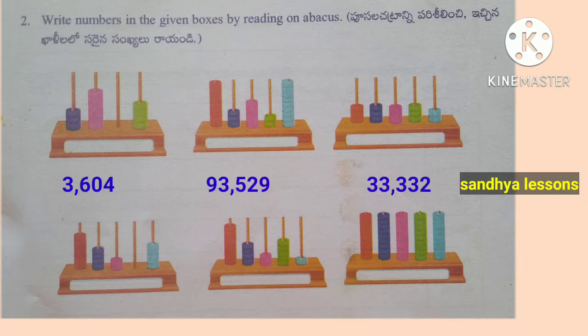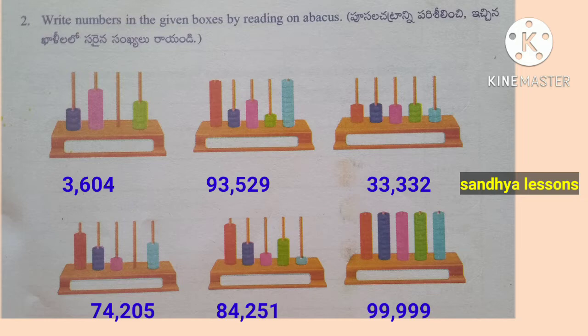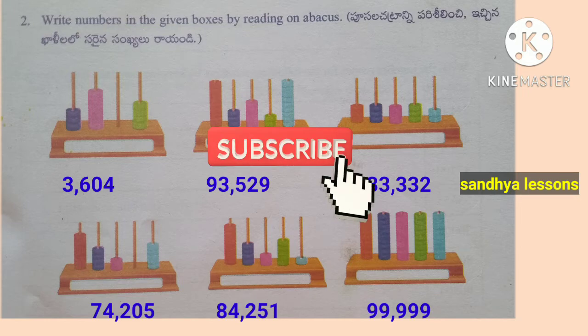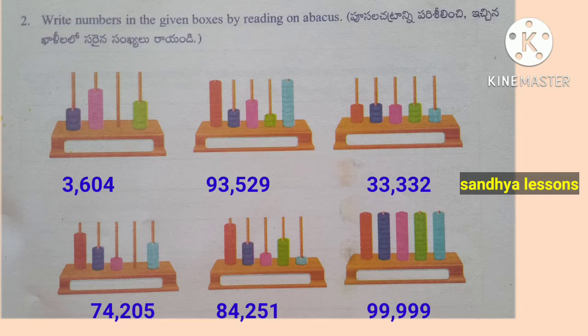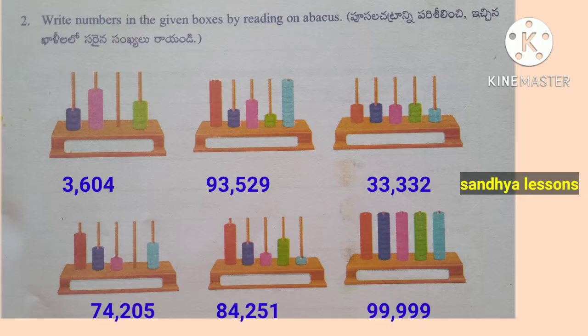Second: Write numbers in the given boxes by reading the Abacus. The answers are: 3,604; 93,529; 33,332; 74,205; 84,251; and the last number is 99,999.